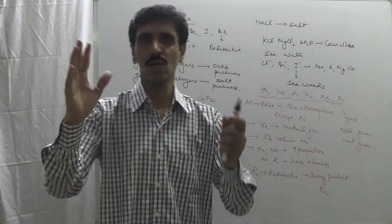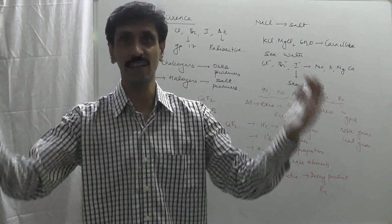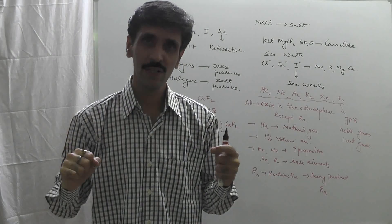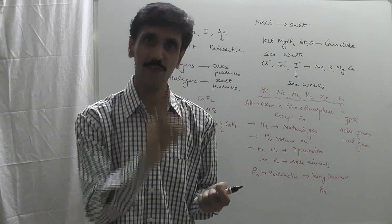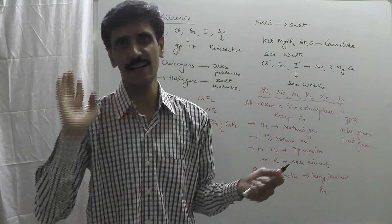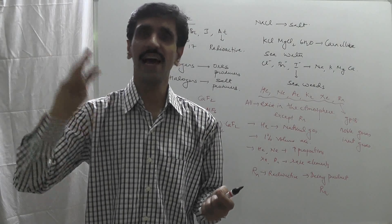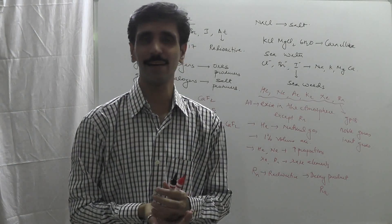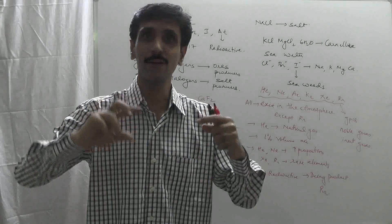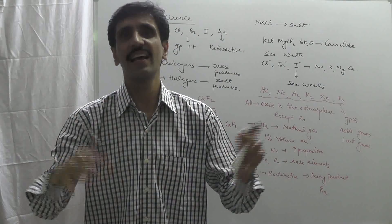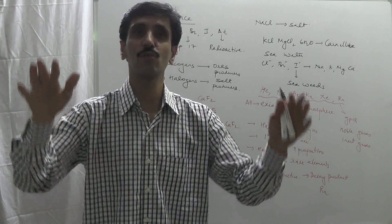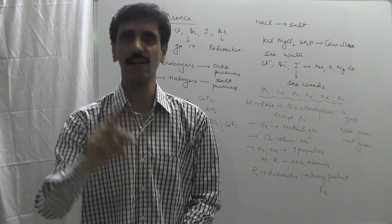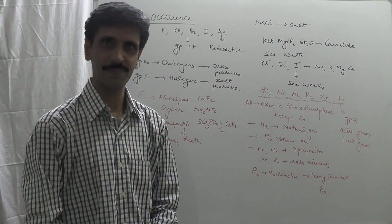Since groups 16, 17, and 18 are being considered together, comparison becomes easy. A common point with respect to occurrence is that the last element of all three groups is radioactive: polonium of group 16, astatine of group 17, and radon of group 18 are all radioactive elements. Hence their stability compared to the previous elements of the same group is less, and therefore their existence and occurrence are also in a lesser proportion.